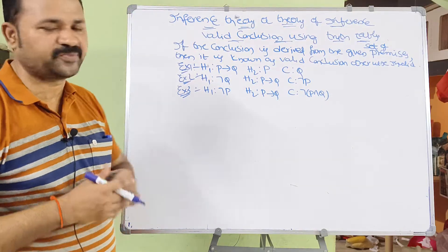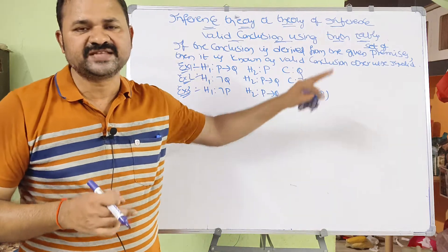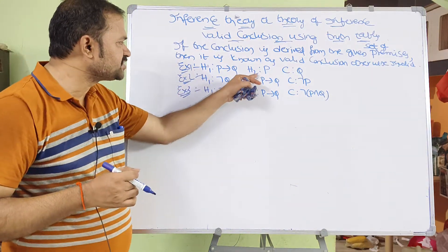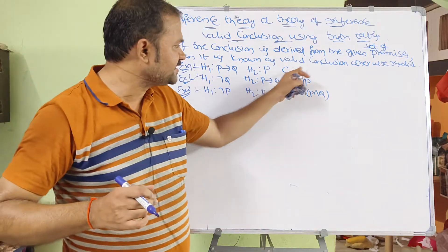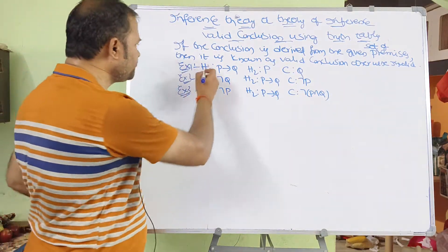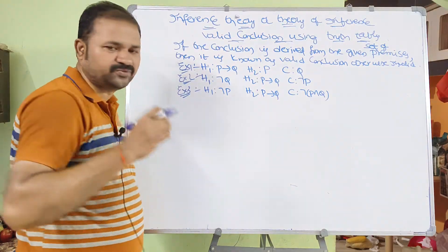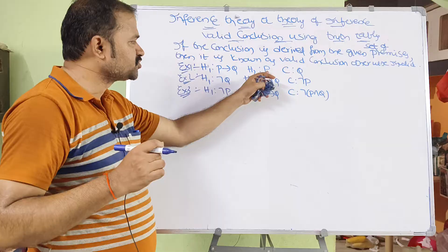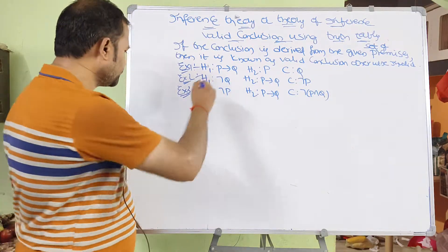We have three examples to solve using truth tables. H1 and H2 are the premises, and C is the conclusion. For the first example: H1 is P implies Q (premise 1), H2 is P (premise 2), and the conclusion is Q.